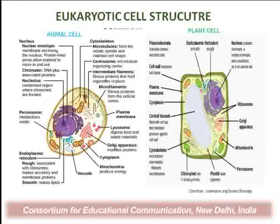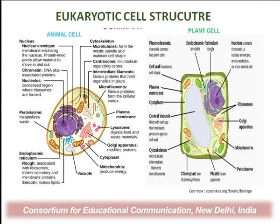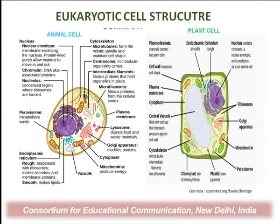The eukaryotic cell structure includes both animal cells and plant cells. Both cells have different cell organelles but share many similarities. Animal cells have ribosomes, endoplasmic reticulum, mitochondria, Golgi body, peroxisomes, and lysosomes — these organelles are also present in the plant cell. However, plant cells additionally have chloroplasts, cell wall, and vacuoles, which are not present in animal cells.